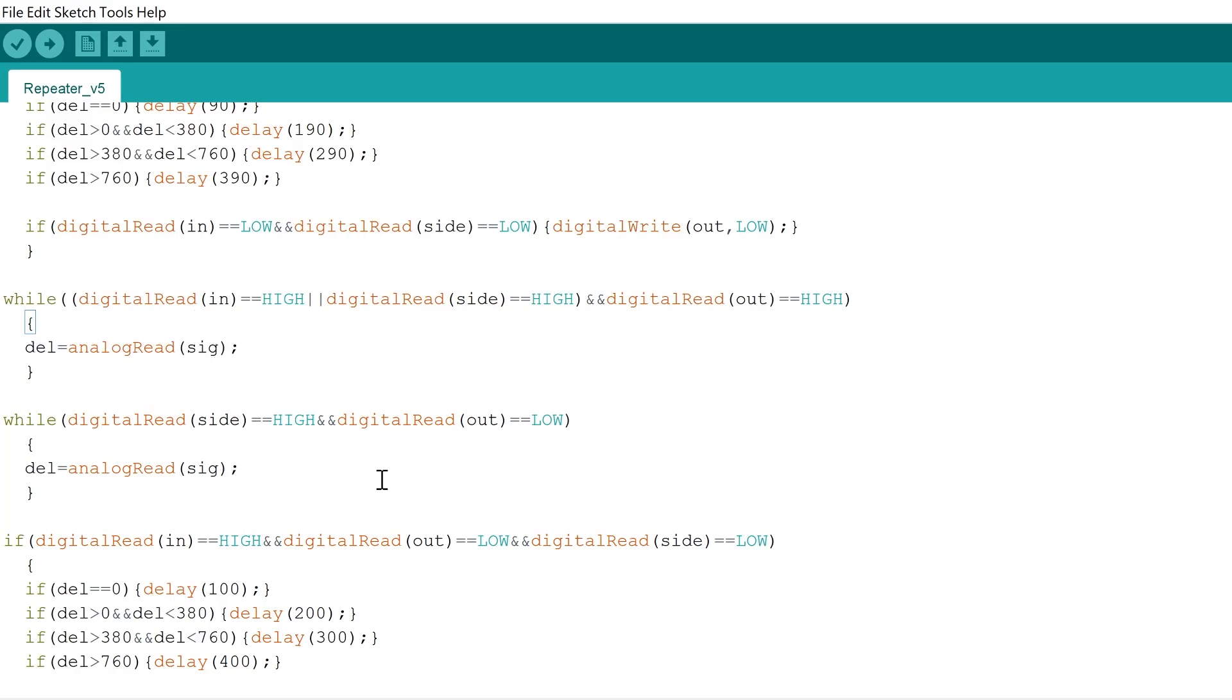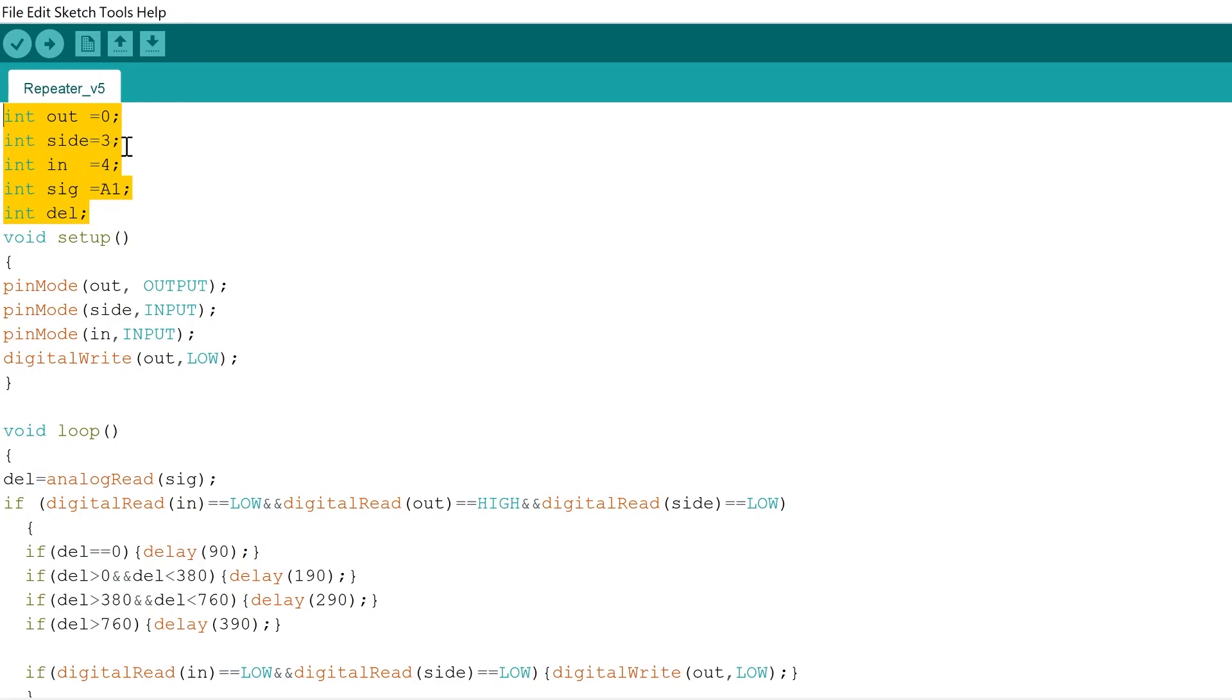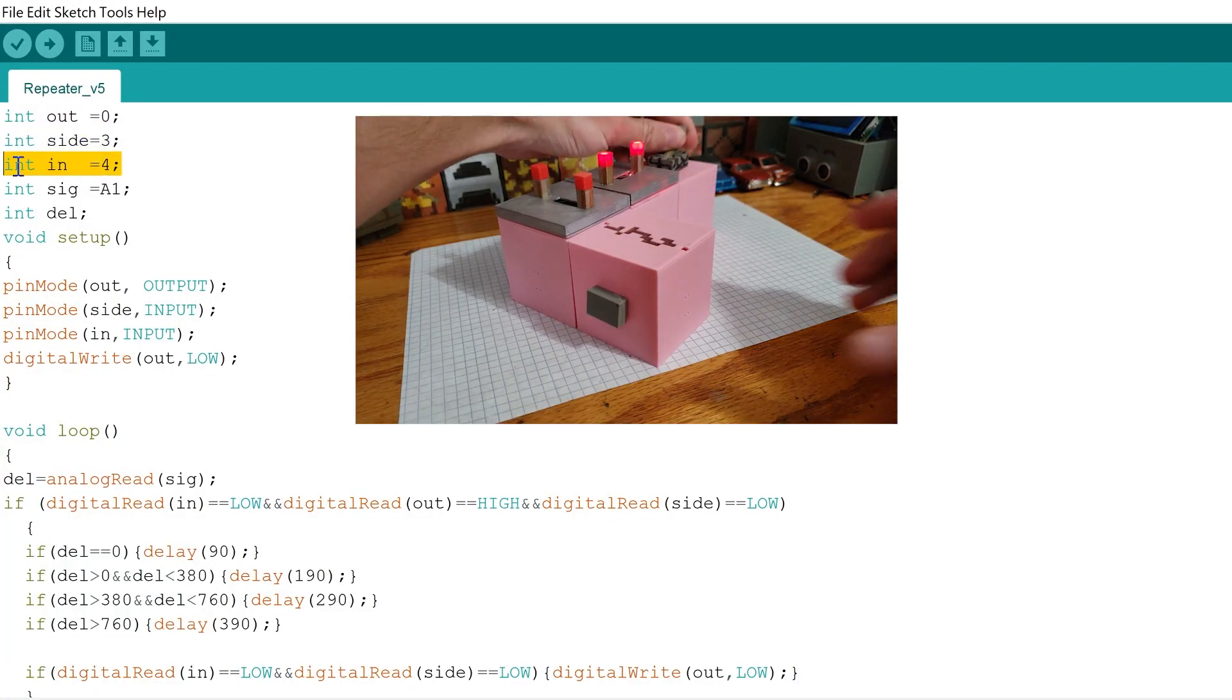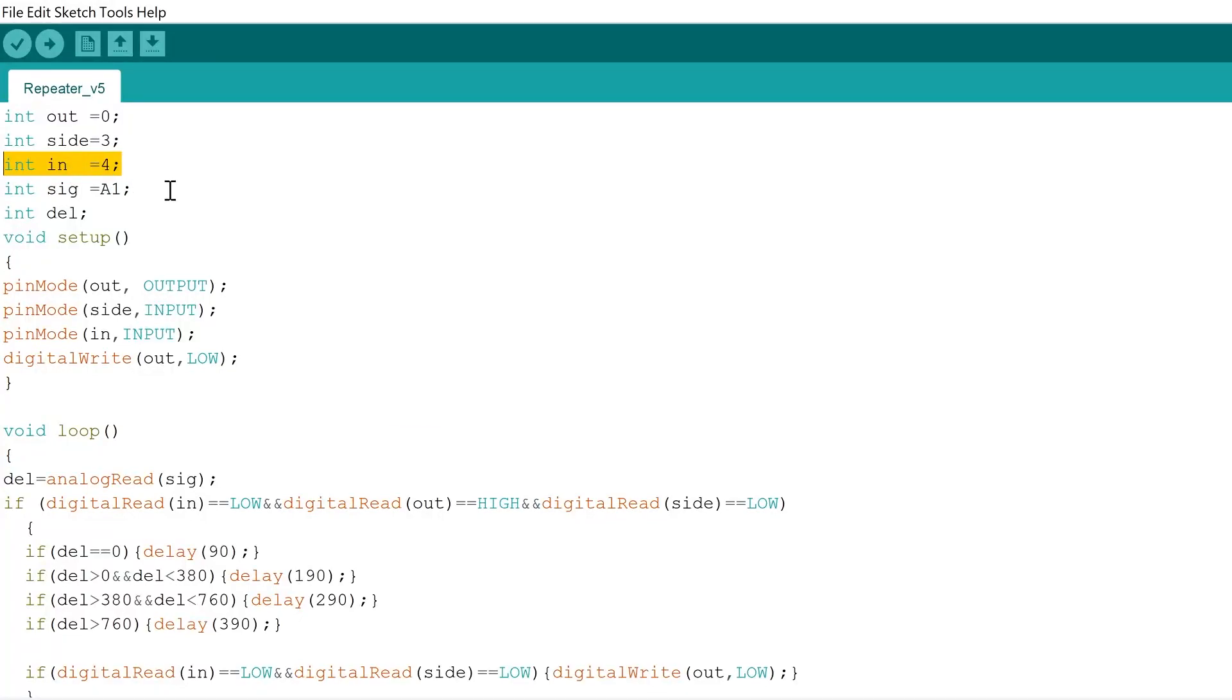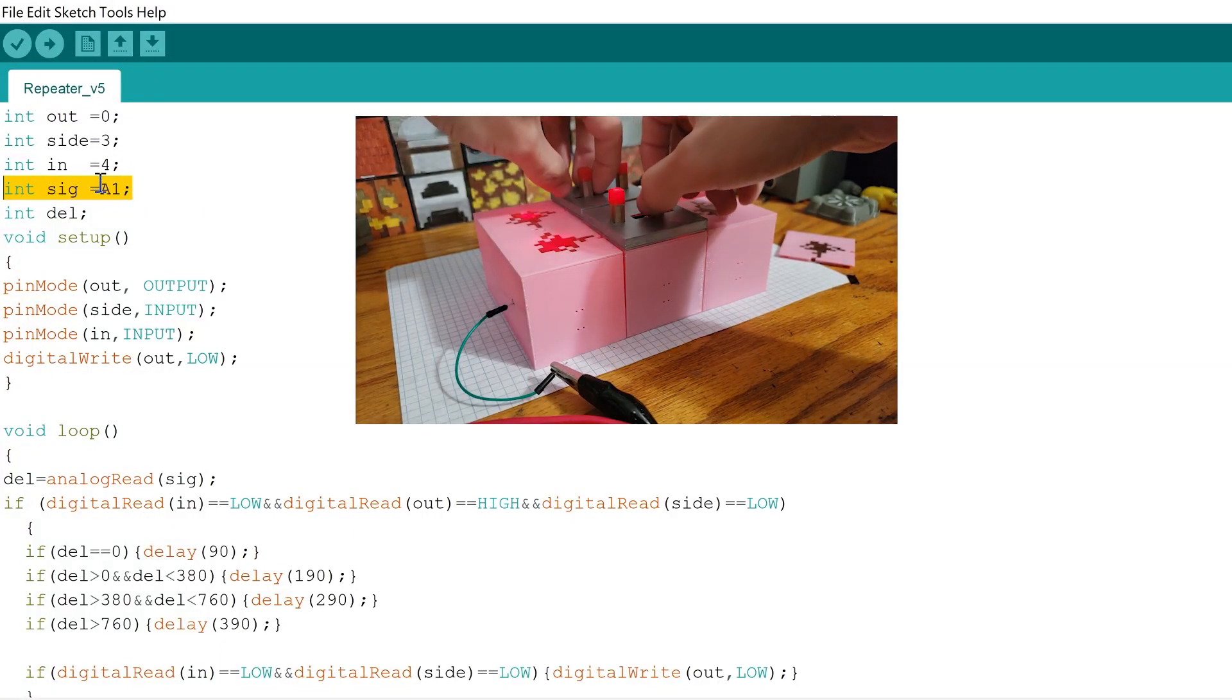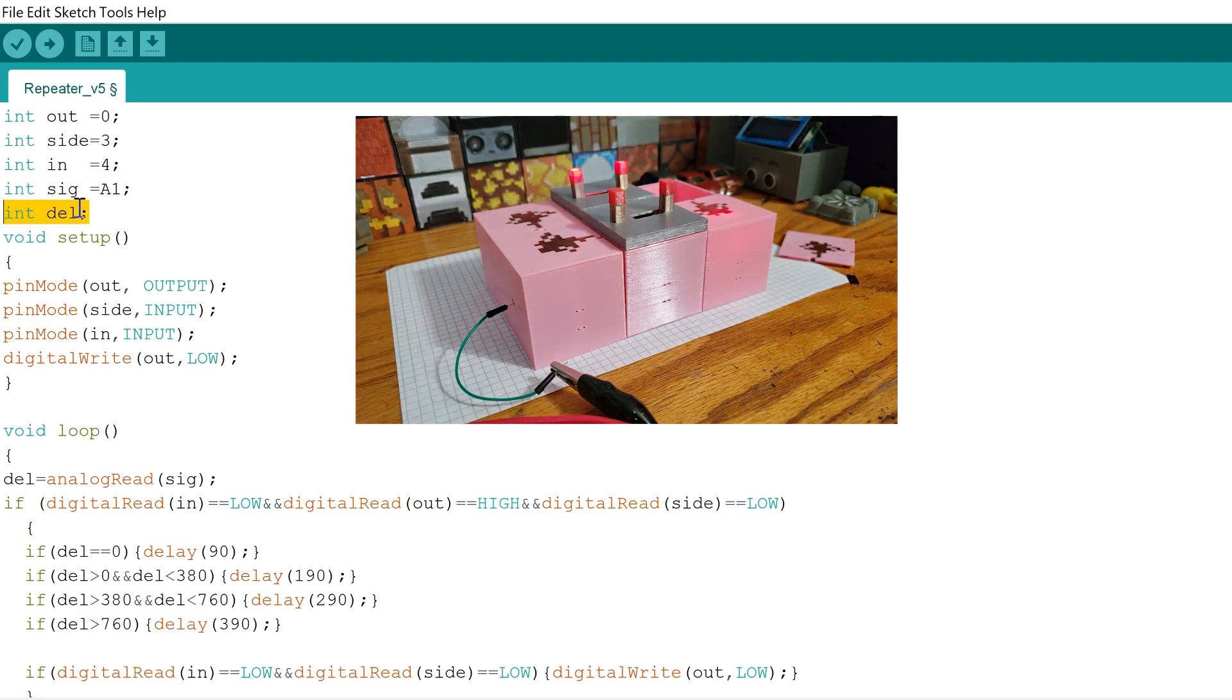These are the variables I chose. The out pin connected to pin 0 will power the LEDs. The variable 'side' checks pin 3 if it's being locked. 'In' is on pin 4 checking whether it's receiving power to turn the repeater on. The variable 'signal' is set on pin 2, called A1 as analog pin 1. It'll be reading the divided voltage from the repeater potentiometer. Finally, this last variable is called 'del' for delay. This variable will be connected to the signal as memory.